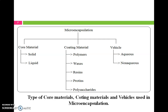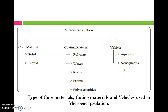Here is a summary of microencapsulation. Core materials used are generally solid, liquid, or gas. Coating materials used may be polymers, waxes, resins, proteins, or polysaccharides. Vehicles used may be aqueous or non-aqueous.